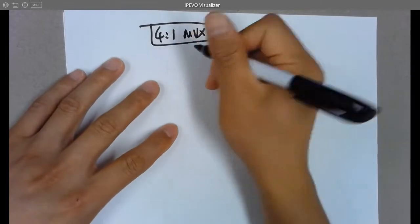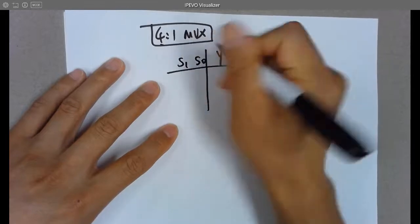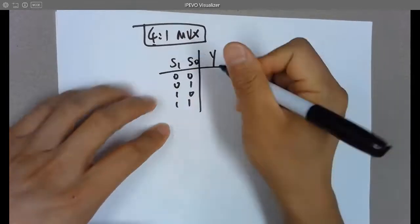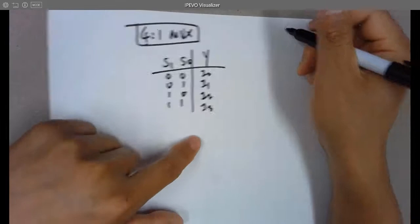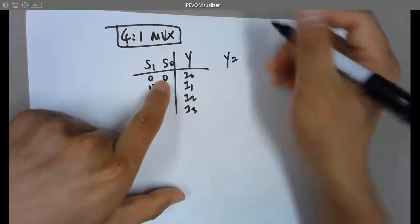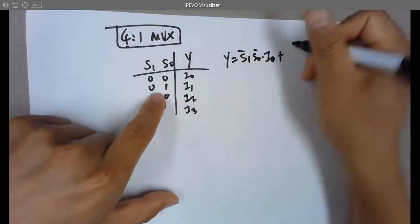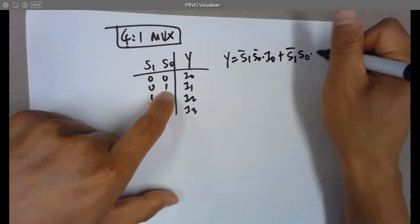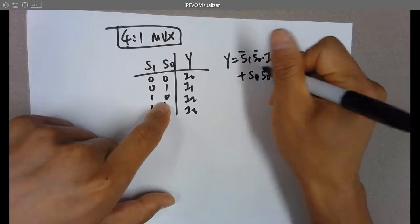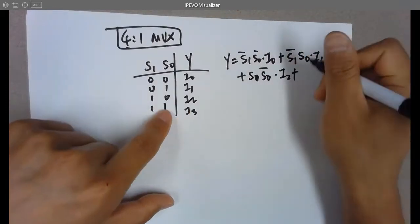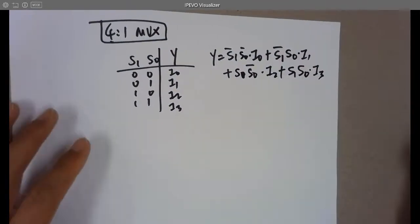For the 4-to-1 MUX, first the truth table: you have 4 options so you need 2 selection bits. The combinations are 00→I0, 01→I1, 10→I2, 11→I3. The logic expression is: Y = (S1_bar·S0_bar·I0) + (S1_bar·S0·I1) + (S1·S0_bar·I2) + (S1·S0·I3).